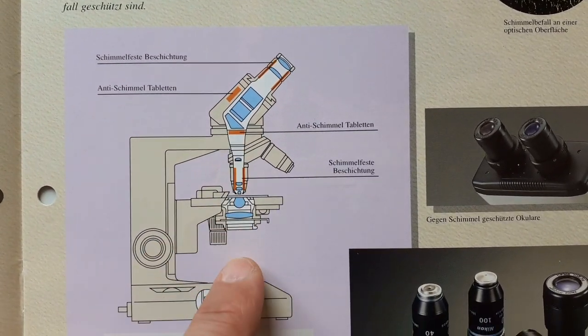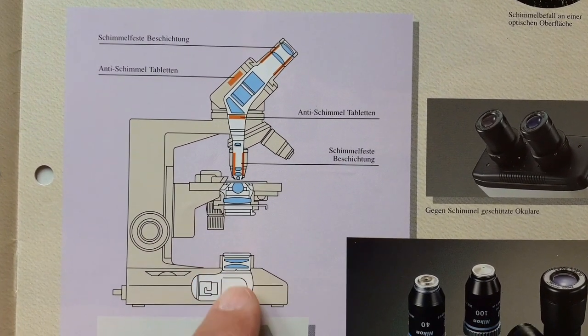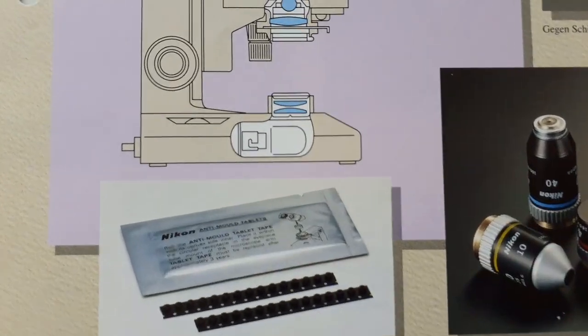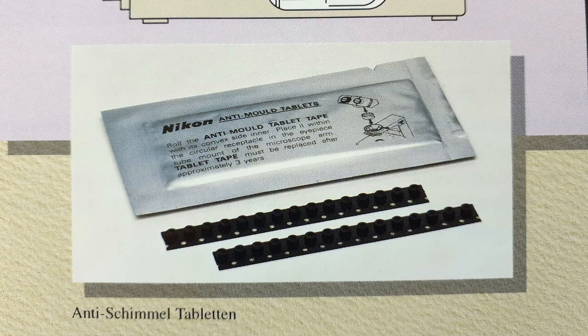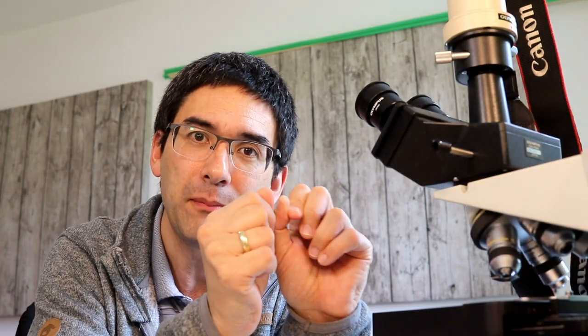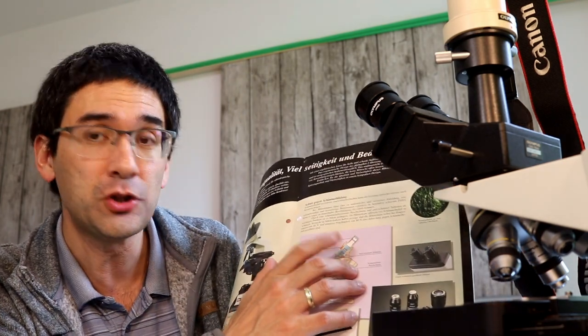The other thing is they were actually selling anti-fungus tablets. These are basically sticky strips, and what you do is there are places in the microscope where you have to stick them in, and this releases some kind of a chemical to reduce the fungal growth inside the microscope. They actually say here that after three years you have to replace that.